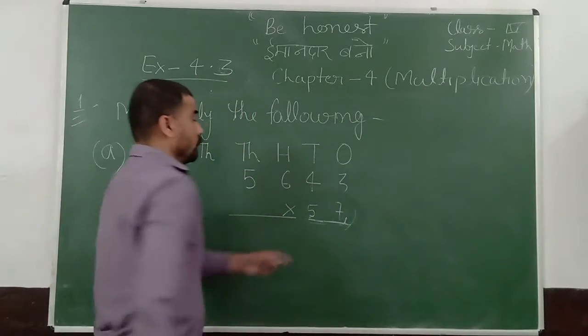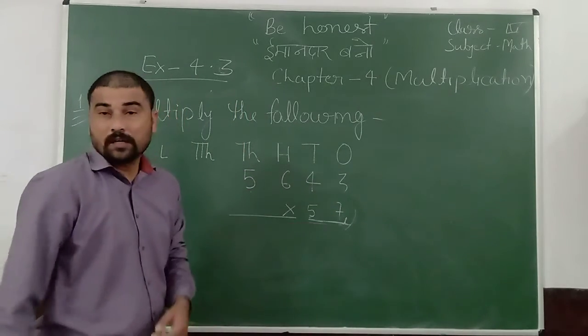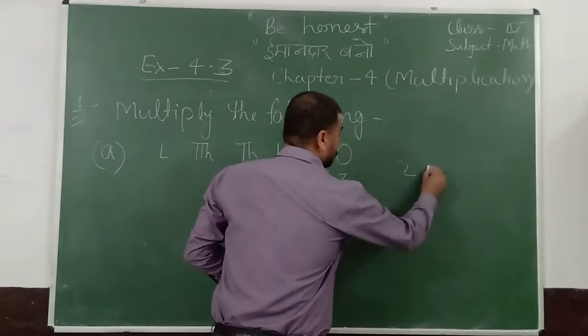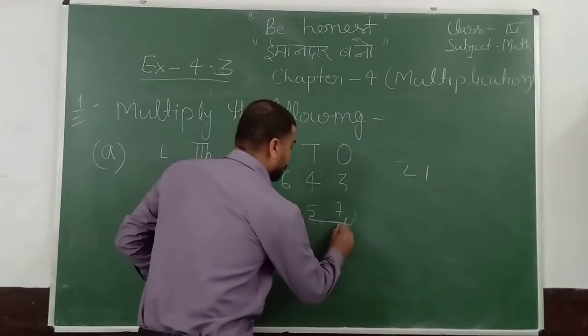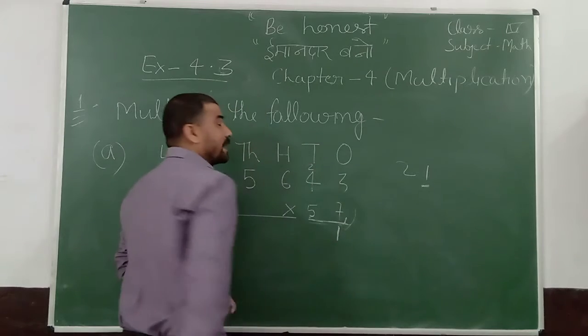7. 7 into 3 is 21. So put 1 here. And 2 is carry.